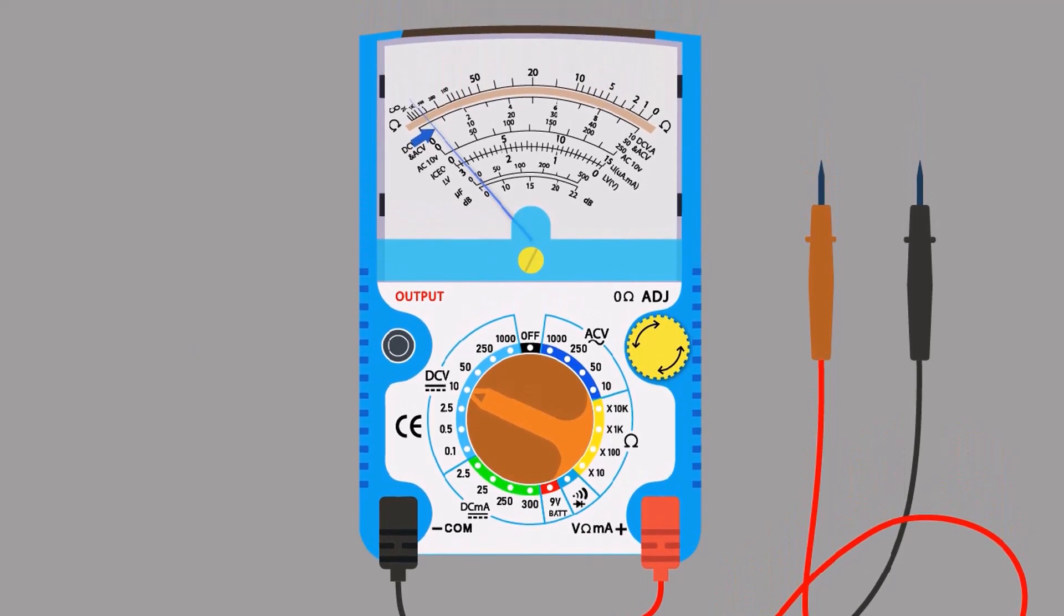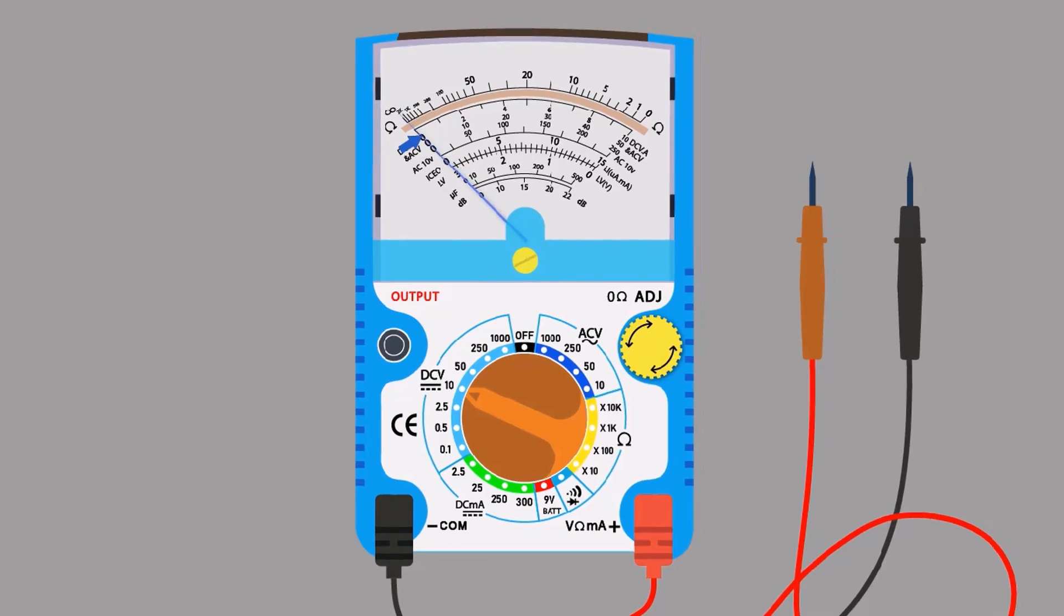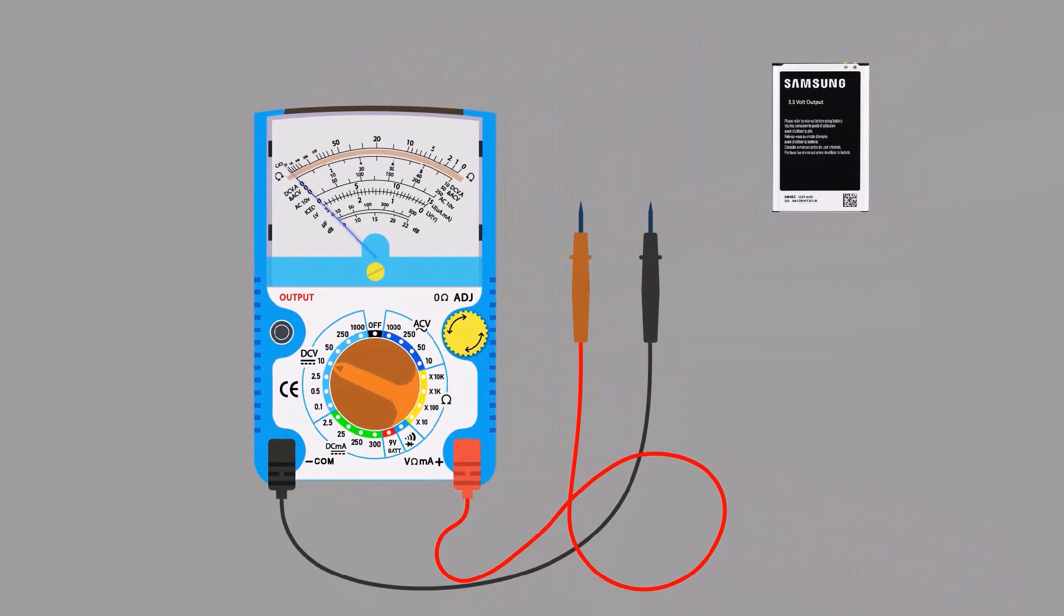If we see the needle, it is not at zero, so it needs to be calibrated before taking any reading. In order to calibrate it, rotate the zero ohmic knob clockwise or anti-clockwise with the help of a screwdriver. Now it is calibrated and ready to take a reading.